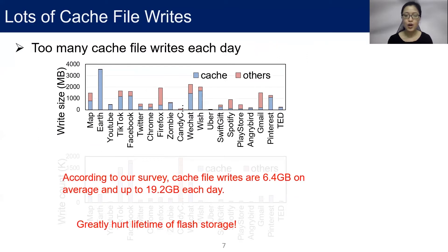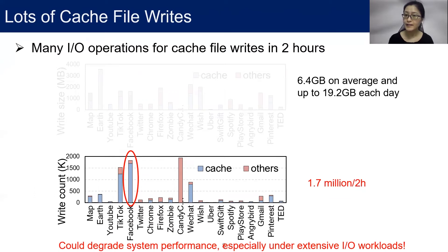Thus, according to our survey and cooperative vendors' data, cache file writes could be 6.4 gigabytes on average and up to 19.2 gigabytes each day. So many writes could greatly hurt the lifetime of flash storage. Similarly, write numbers also vary by application. According to our evaluation, write numbers could be 1.7 million per two hours. These writes could produce many I/O operations and thus could decrease system performance, especially under extensive I/O workloads.